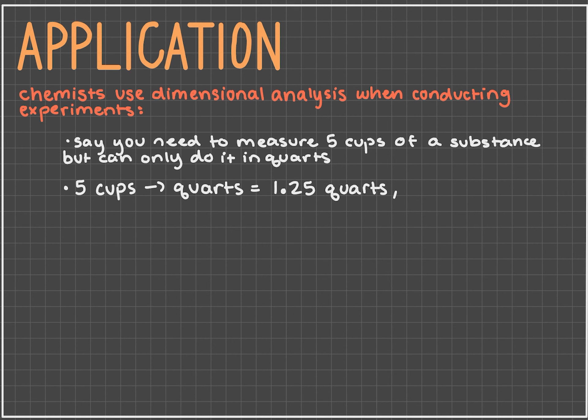So you would measure out 1.25 quarts of the substance for your experiment. So chemists always use dimensional analysis to convert units in their experiments, whether it's for measuring or if they just need to convert that substance into a different unit.